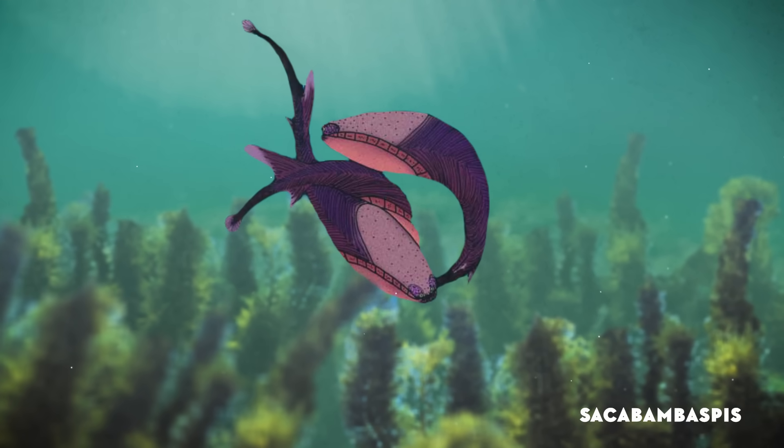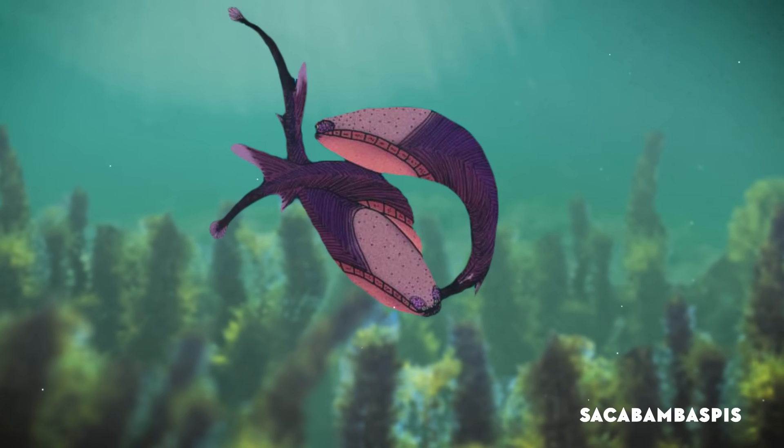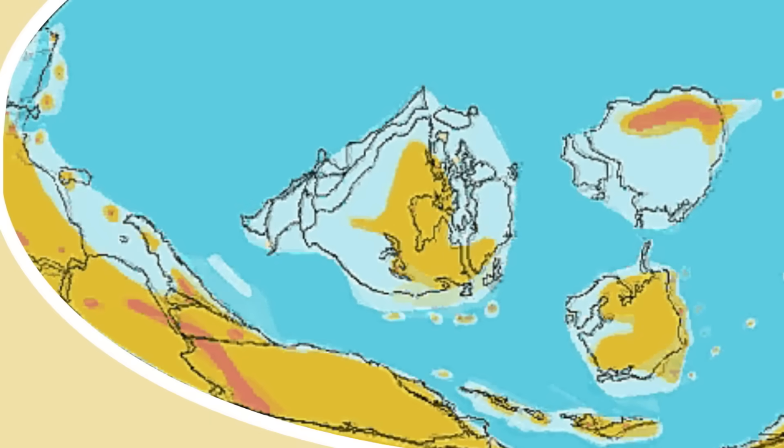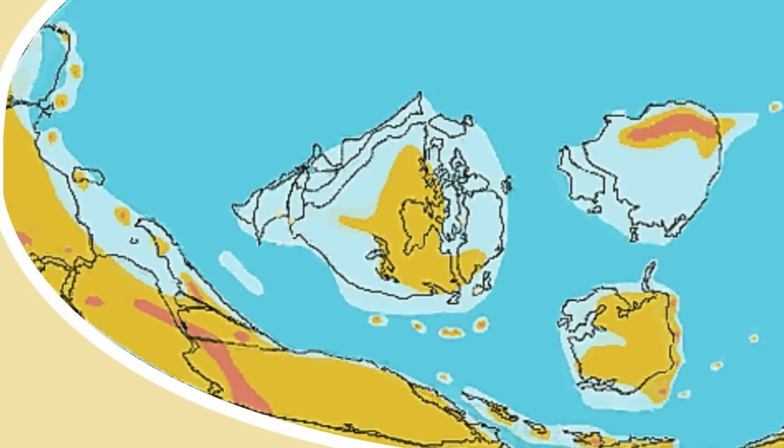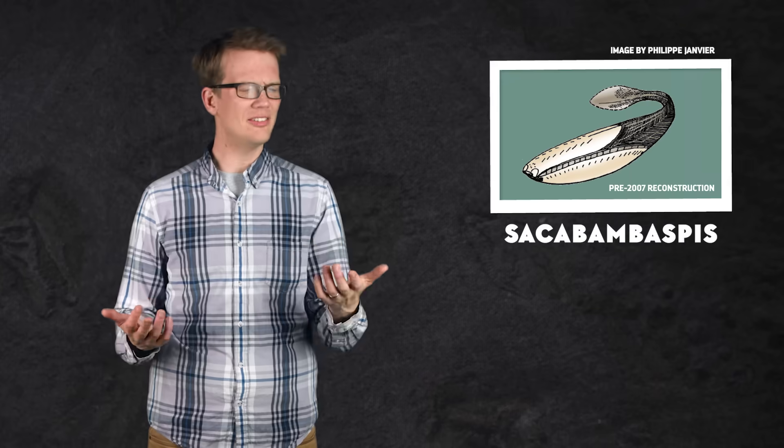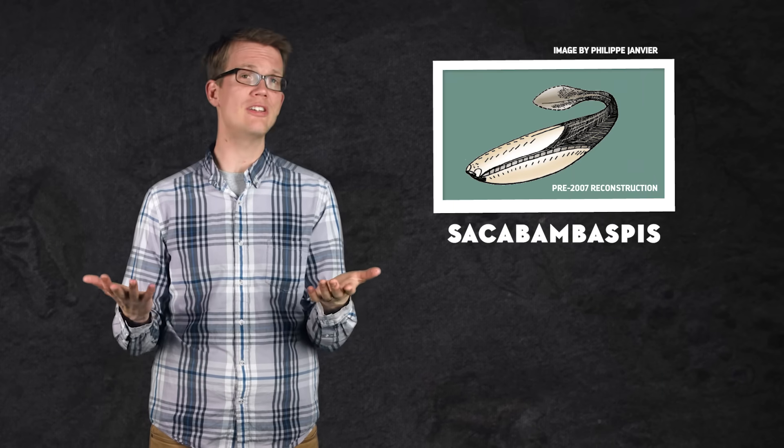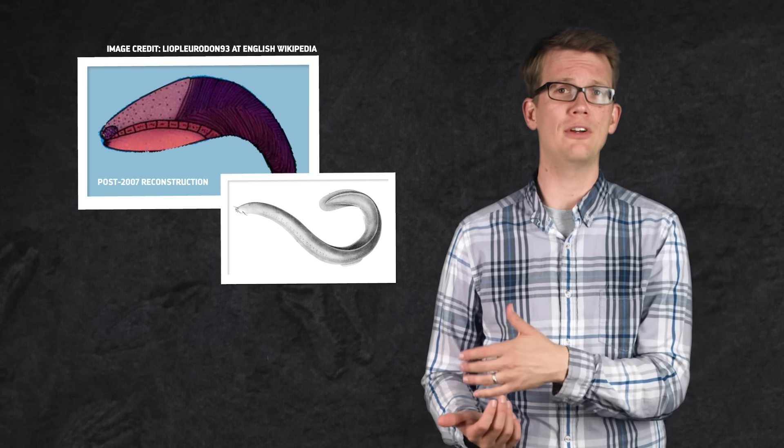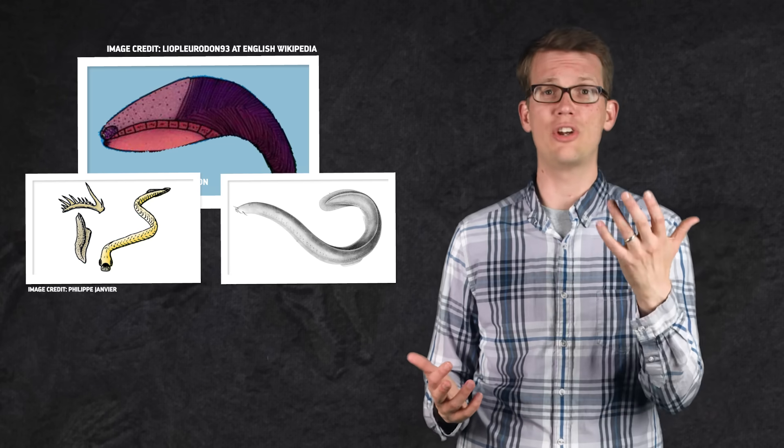The earliest armored fish we have fossils of is called Sacabambaspis, a member of the subclass known as Arandaspida. This fish lived in the coastal waters of what's now Bolivia during the Ordovician period, some 470 million years ago. And honestly, it looks more like a watermelon with a tail than a fish. It had no jaws and no dorsal or side fins. It was only marginally more fish-like than its earlier relatives, hagfish and conodonts, with which it shared a common ancestor.